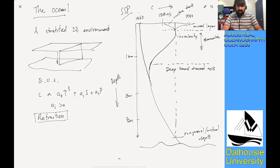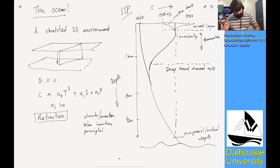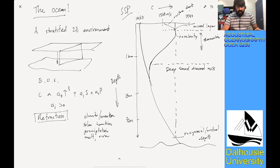In terms of things affecting the surface mixed layer, we're concerned with climate and weather — both large scale and small scale — including solar heating, precipitation, fresh water lenses due to the salinity term, melt water in the Arctic, river input, and wind stress. Wind stress can deepen the mixed layer or create a truly isovelocity mixed layer.